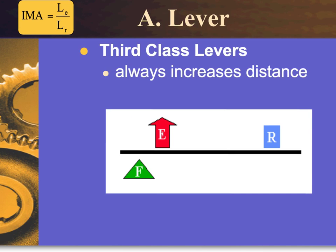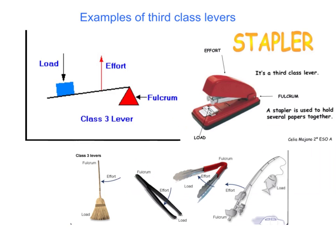Third class levers always increase distance. The fulcrum is at one end, and the effort is between the fulcrum and the resistance. Examples include using a broom to sweep, tweezers, cooking tongs, a fishing rod, and a stapler — all with an identifiable fixed point, effort, and load in that arrangement.